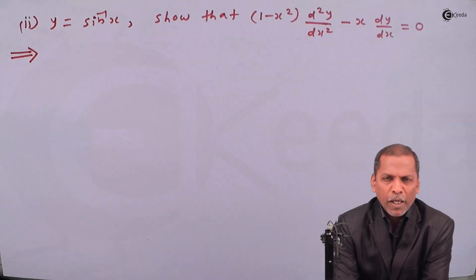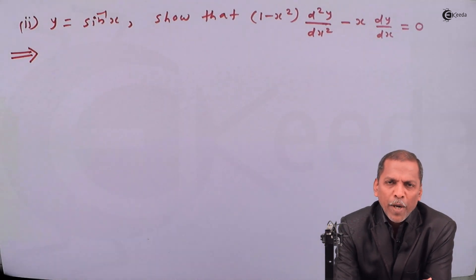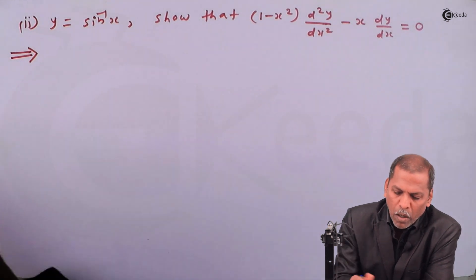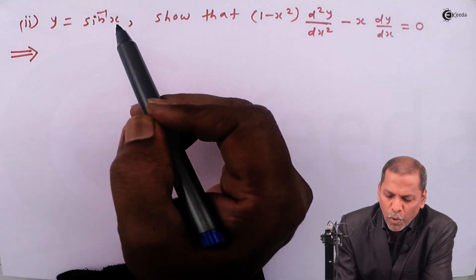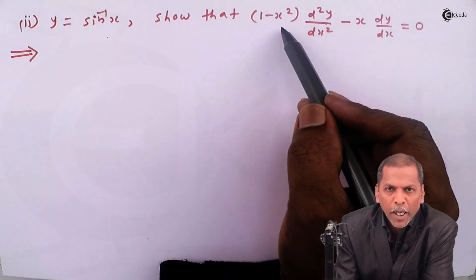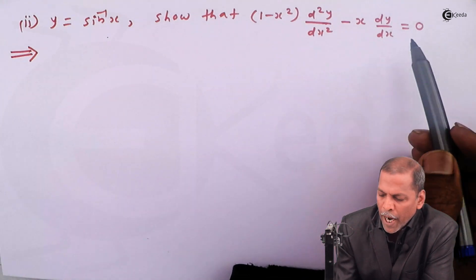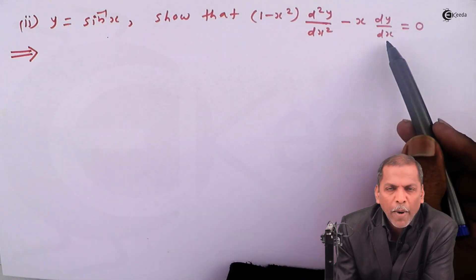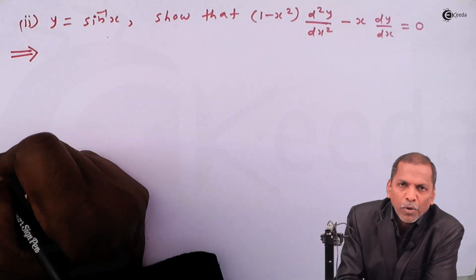Hello friends, now we see problem 3 sub question 2, which is also based on higher order derivatives of the chapter on differentiation. The problem is: y equal to sine inverse x. Then we have to show that 1 minus x squared into d²y/dx² minus x into dy/dx is equal to 0.